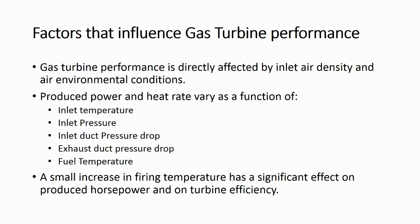Gas turbine performance is directly affected by inlet air density and air environmental conditions. Produced power and heat rate vary as a function of inlet temperature, inlet pressure, inlet duct pressure drop, exhaust duct pressure drop, and fuel temperature.